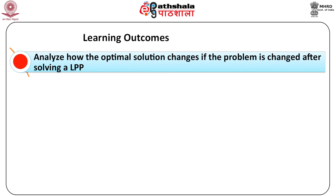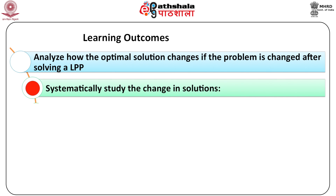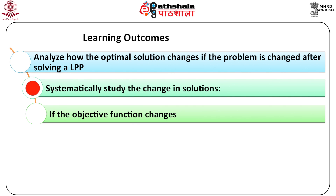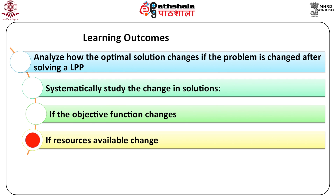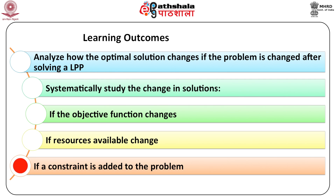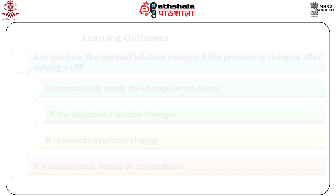Analyze how the optimal solution changes if the problem is changed after solving a linear programming problem. Systematically study the change in solutions: first, if the objective function changes; second, if resources available change; third, if a constraint is added to the problem.